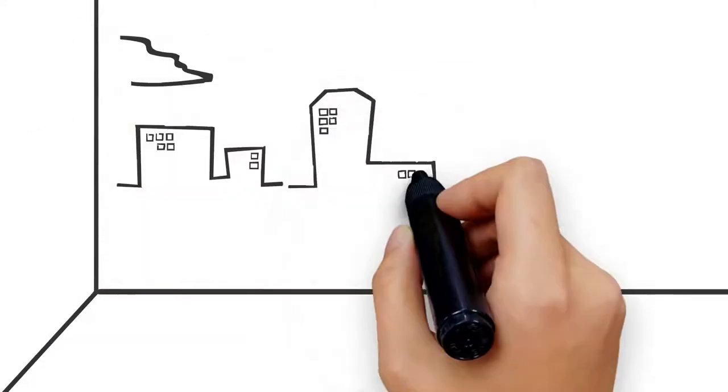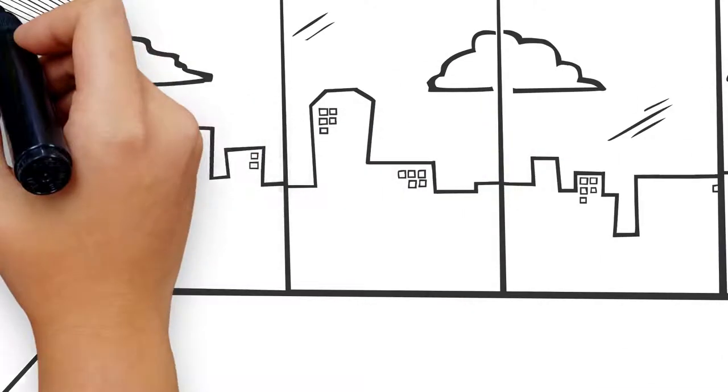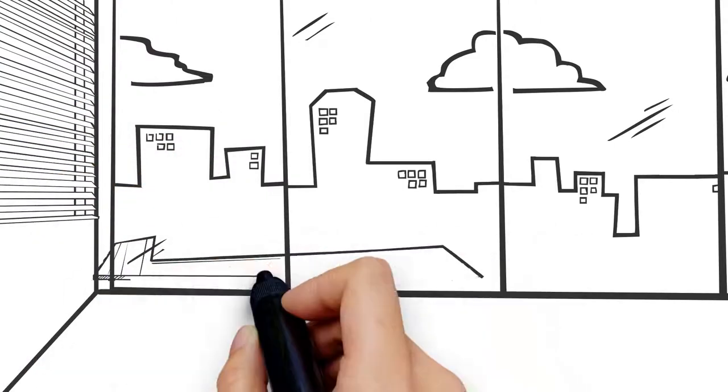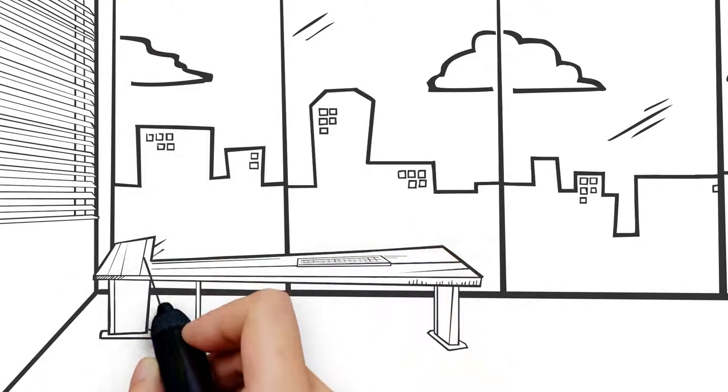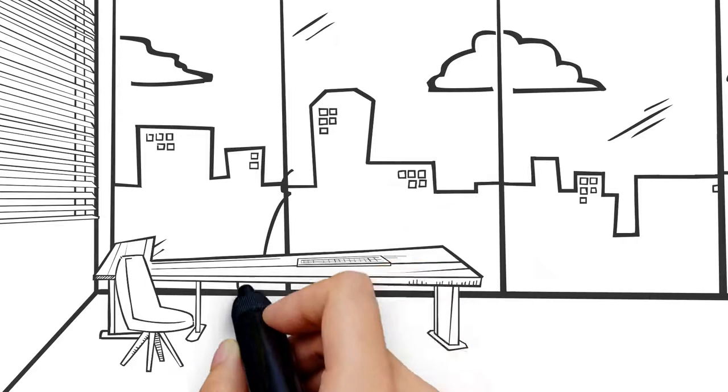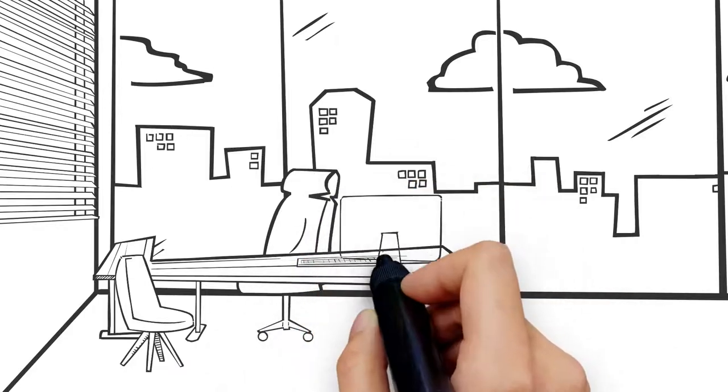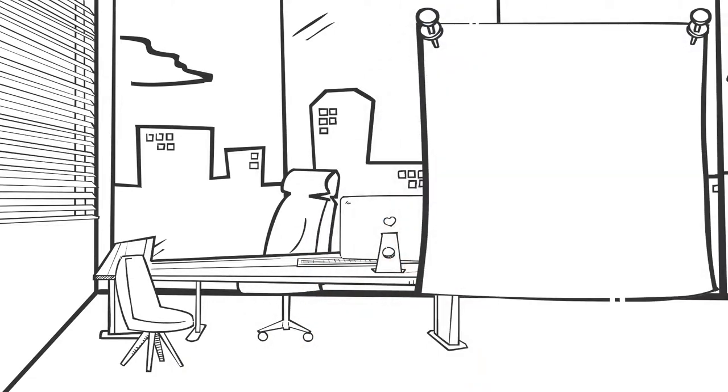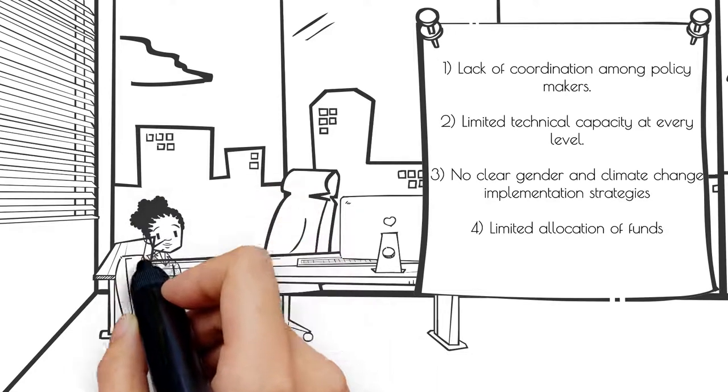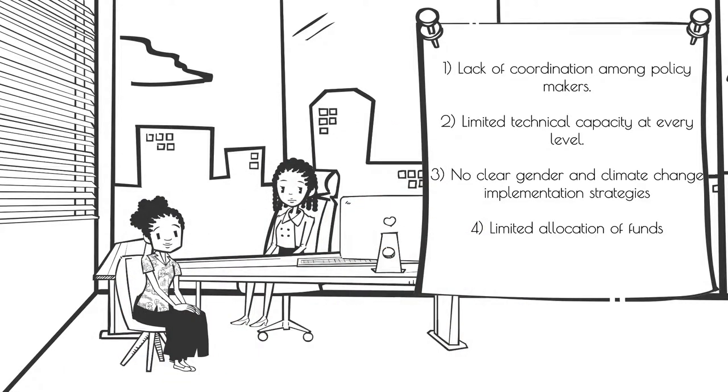Even though there has been considerable progress to include climate change adaptation and mitigation in East African policy, there are still some constraints: lack of coordination among policymakers, limited technical capacity at every level, no clear gender and climate change implementation strategies, and limited allocation of funds.